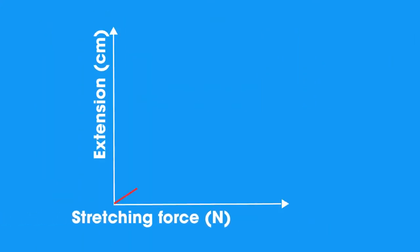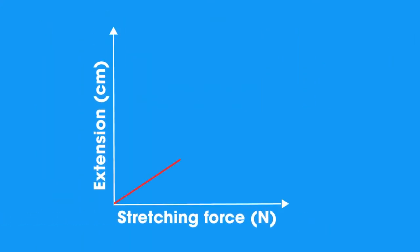So to recap, the straight line shows that the extension is directly proportional to the load on the spring. That means the extension will double if the force doubles, it will treble if the force trebles, and so on. This relationship is known as Hooke's law. There is a linear relationship between force and extension.